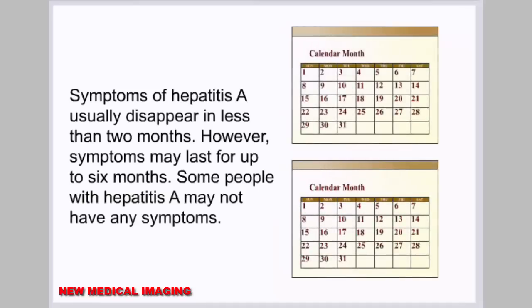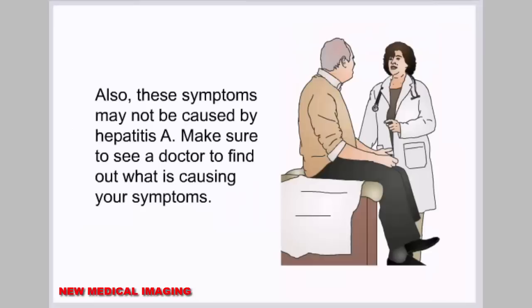Symptoms of hepatitis A usually disappear in less than two months, though they may last for up to six months. Some people with hepatitis A may not have any symptoms at all. Also, these symptoms may not be caused by hepatitis A, so make sure to see a doctor to find out what is causing your symptoms.